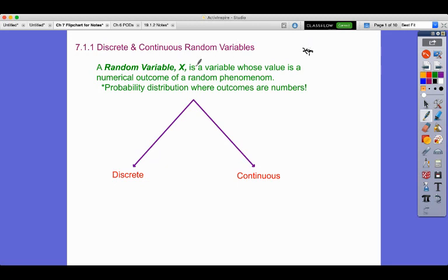Those are data points. It's a variable whose value is a numerical outcome of something that is random. So, it is basically a probability distribution where the outcomes are all numbers. We've seen a few of these and I'll show you a couple examples.